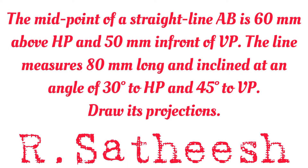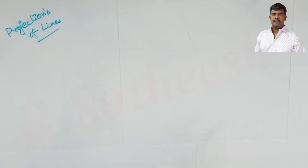Welcome students. Our problem is from the projection of lines topic — a midpoint problem. The midpoint of a straight line AB is 60 mm above HP and 50 mm in front of VP. The line measures 80 mm long and is inclined at an angle of 30 degrees to HP and 45 degrees to VP. Draw its projections.